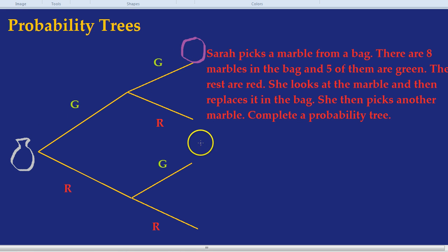What does this branch represent here? That represents getting a red and then a green marble. How about this branch? That represents a red and a red. And this branch is a green and then a red.